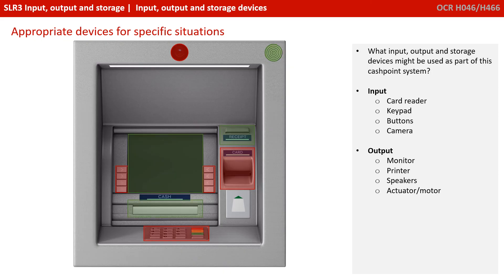There are also various output mechanisms. There's some form of monitor or display, there's a printer which will produce a receipt, and a speaker to give audio feedback. And although it's not obvious, there's some kind of actuator or motor that's actually delivering the cash — and this is considered an output device.